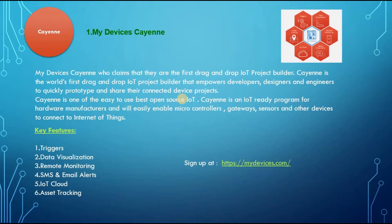Let's find out the key features. These features really help you in building your projects. Below are the features of KN: Triggers, Data visualization, Remote monitoring, SMS and email alerts, IoT cloud, Asset tracking. You can sign up for KN at www.mydevices.com for free and start connecting your Raspberry Pi or Arduino devices.